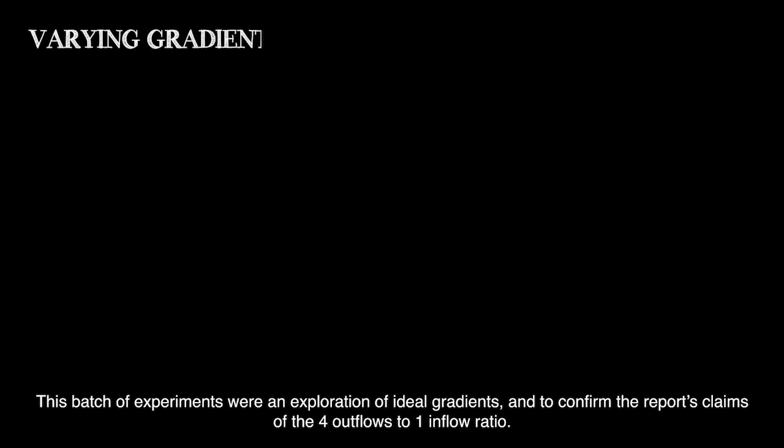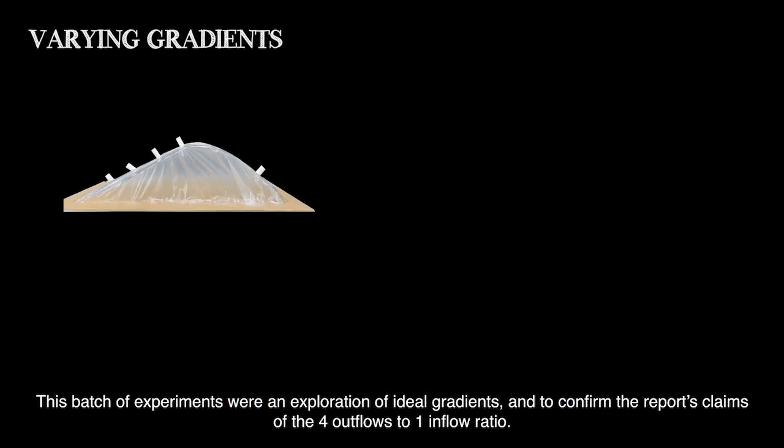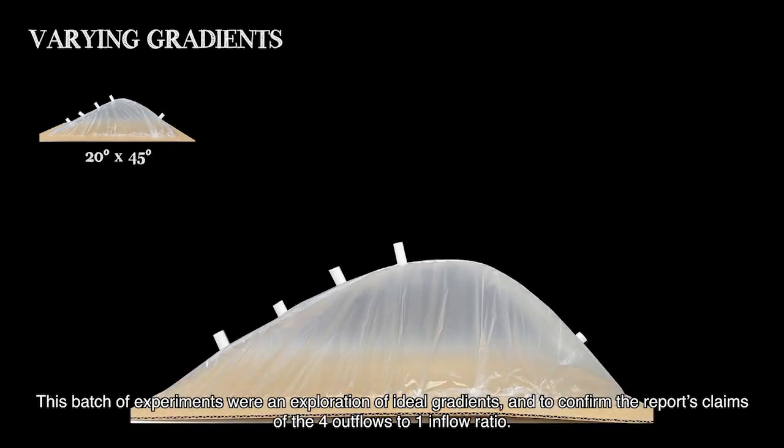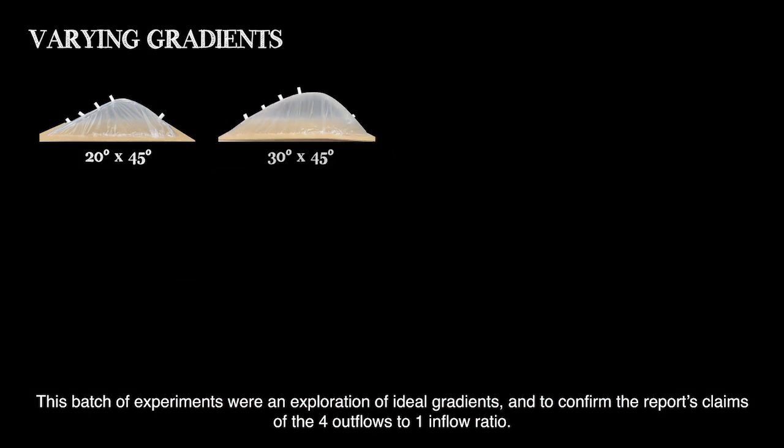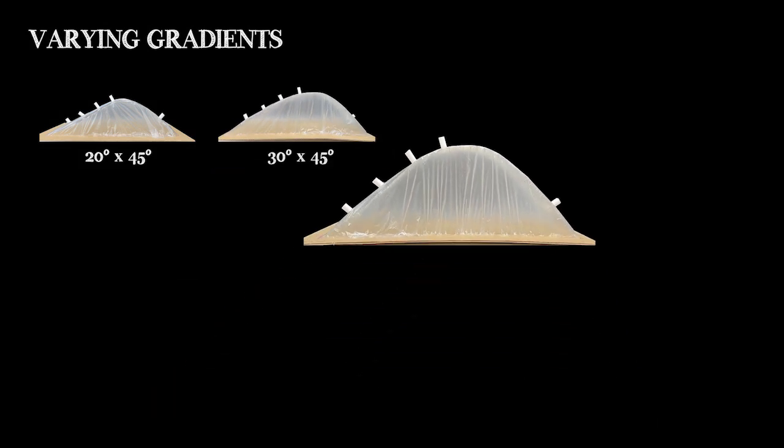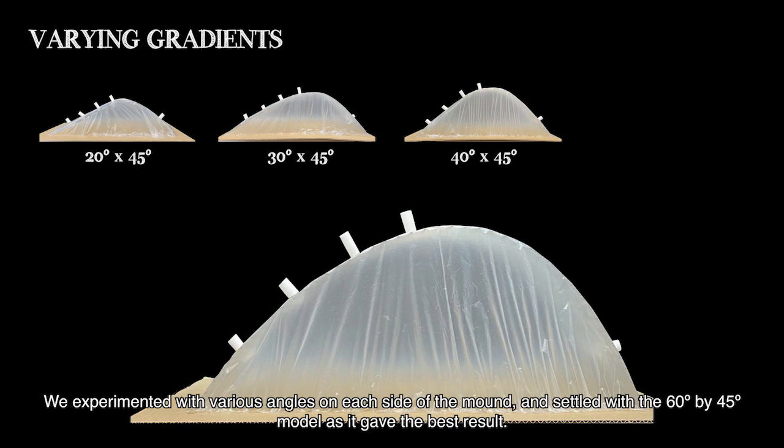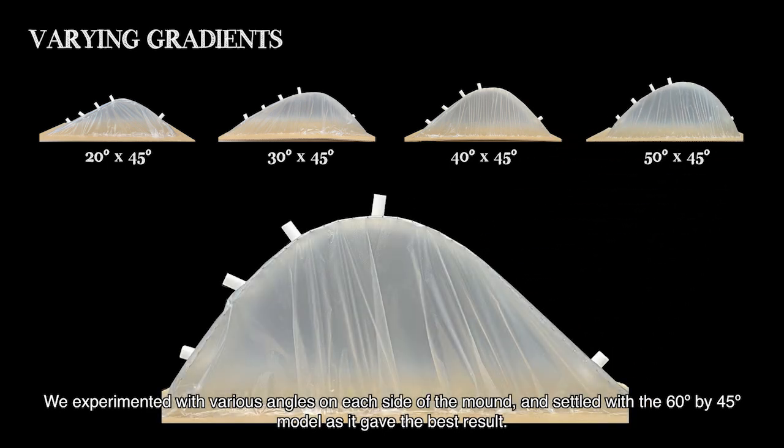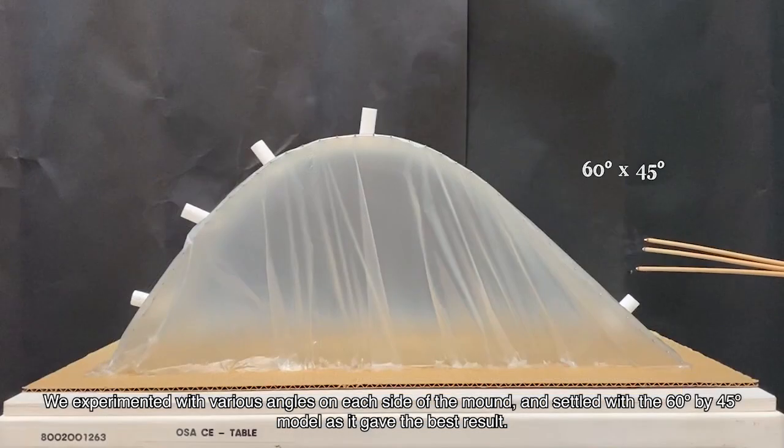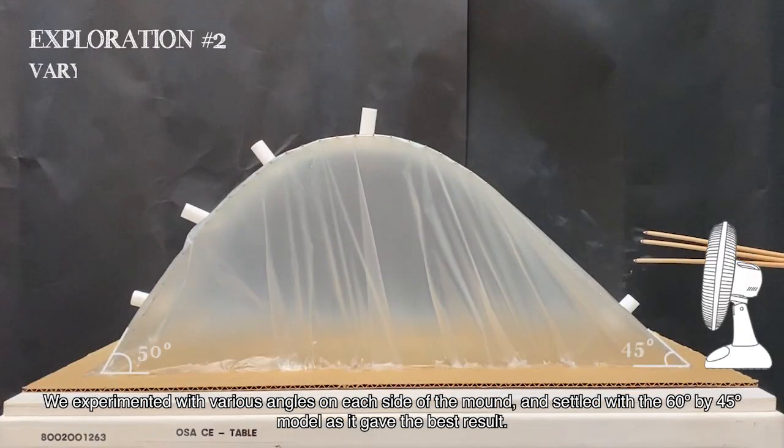This batch of experiments were an exploration of ideal gradients and to confirm the report's claim of the 4 outflows to 1 inflow ratio. We experimented with various angles on each side of the mound and settled with the 60 degree by 45 degree model as it gave the best result.